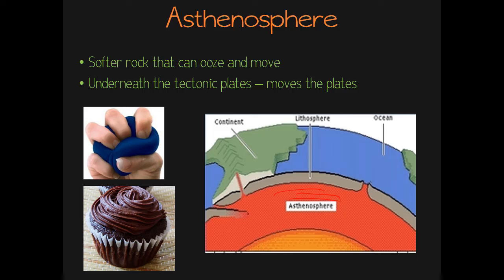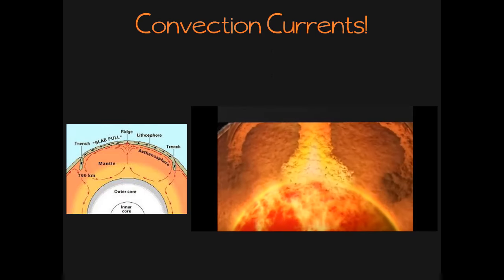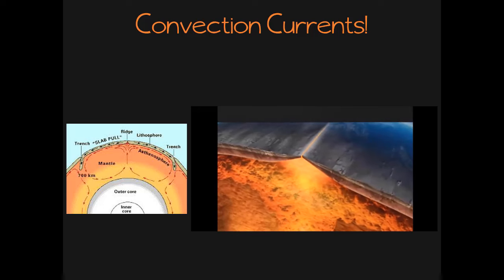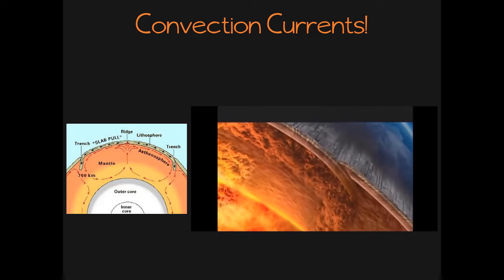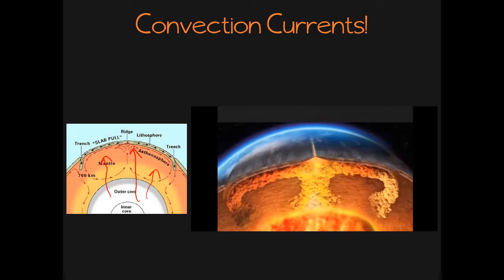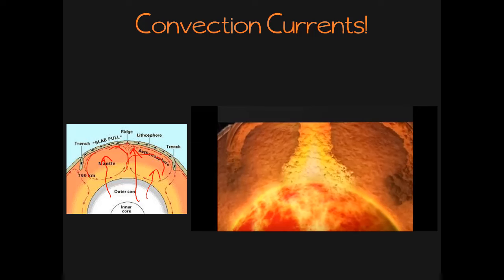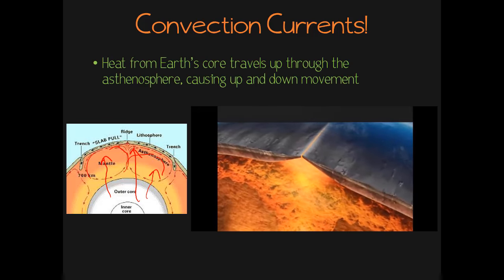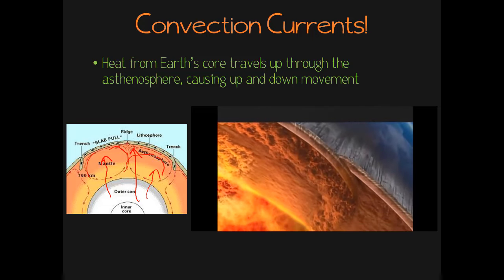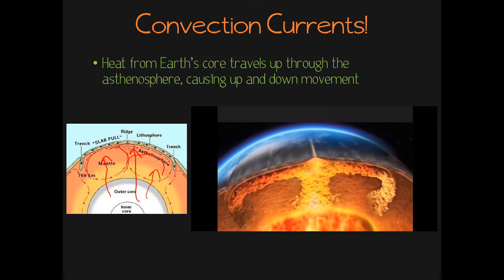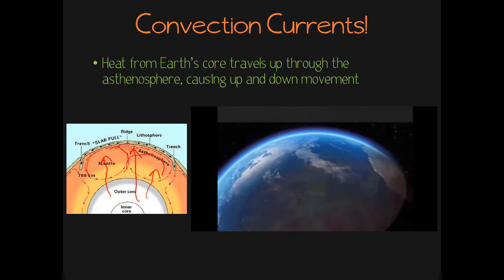So then what makes the asthenosphere move? Well, that's the result of a process called convection currents, and we're going to be learning more about those soon. Basically, convection currents are the movements of substances caused by heat. You've got heat from Earth's core moving up through the asthenosphere, and it causes the asthenosphere to move in a kind of up-and-down movement. And as the convection currents move the asthenosphere, the tectonic plates floating on top move along with it. As the tectonic plates start moving — remember from that map they're moving in all different directions — this causes them to bump and grind against each other, or to separate and move apart from each other, causing a lot of different types of activity on Earth's surface that we'll be learning about in later lessons.